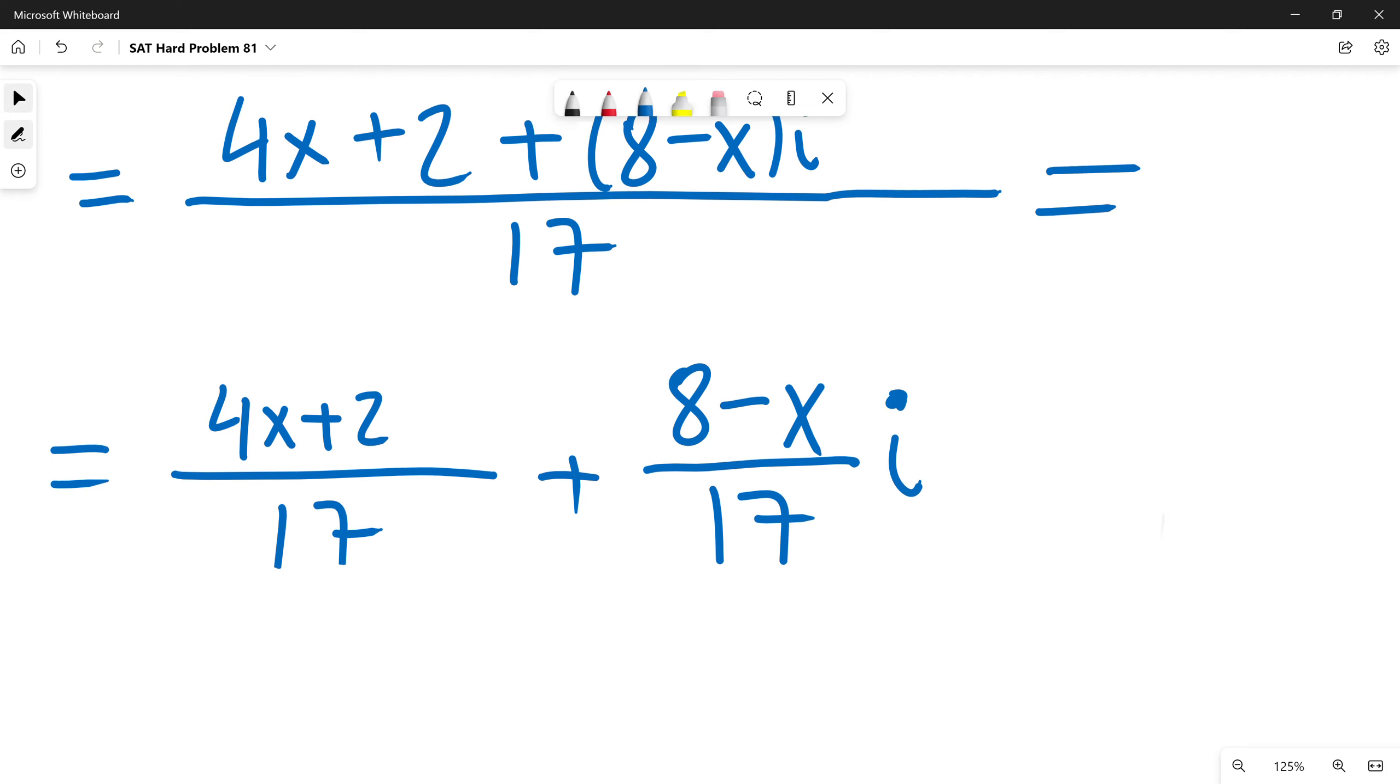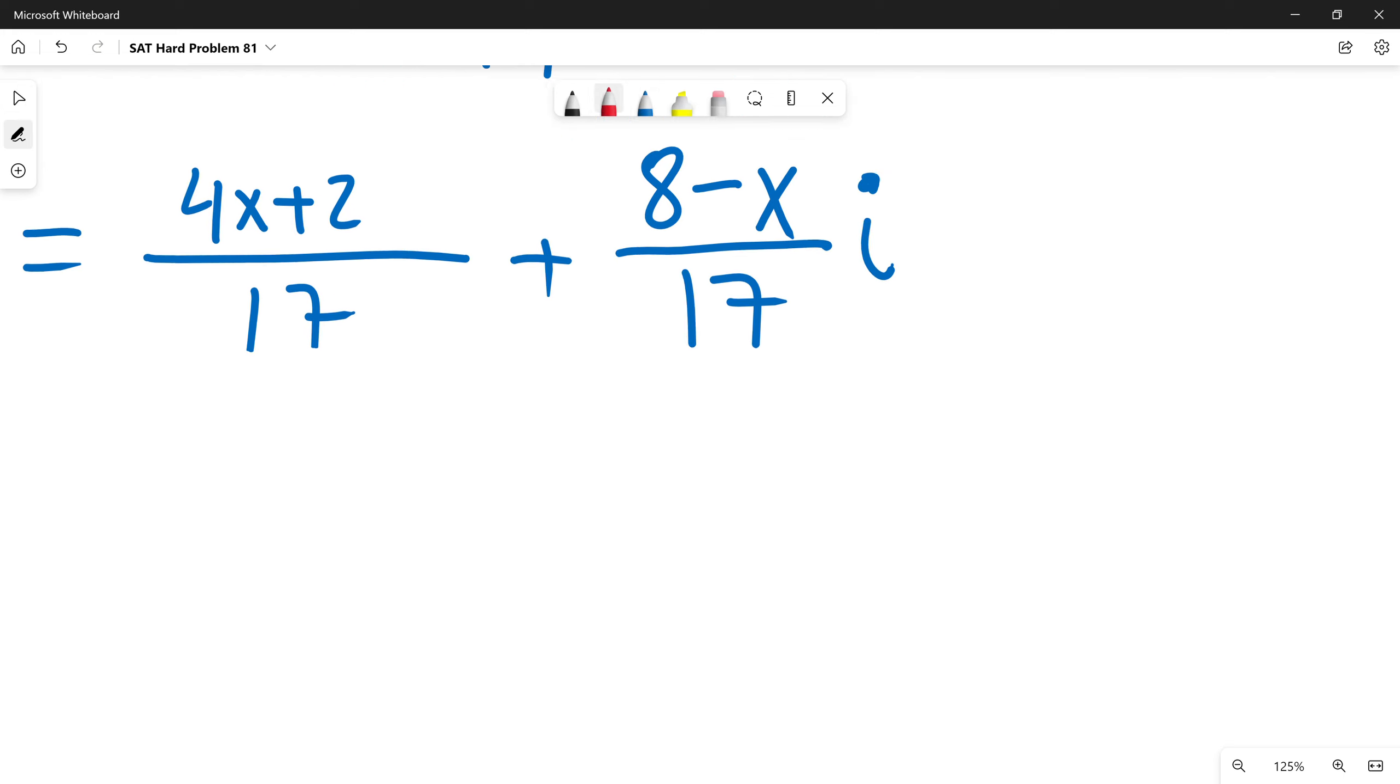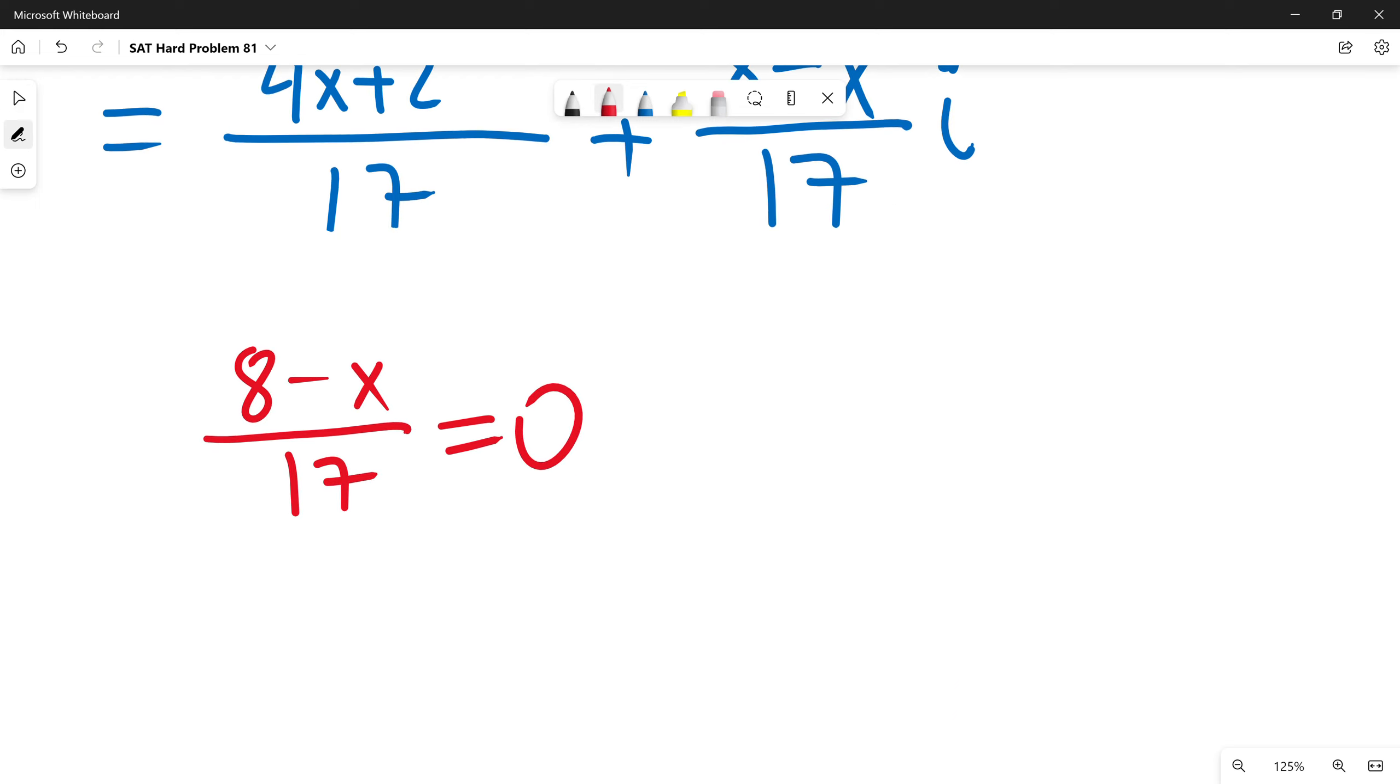Now, I know that this number is real. So, the imaginary part must be 0. So, 8 minus x divided by 17 is 0. I will multiply both sides by 17. So, 8 minus x will be 0. So, from this I know x must be equal to 8.